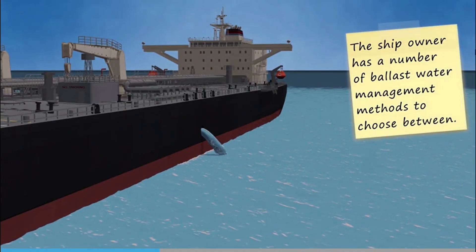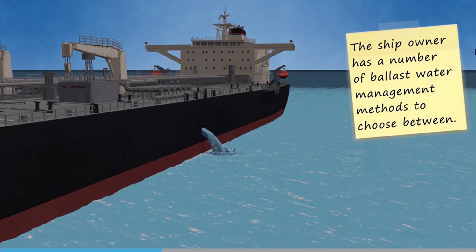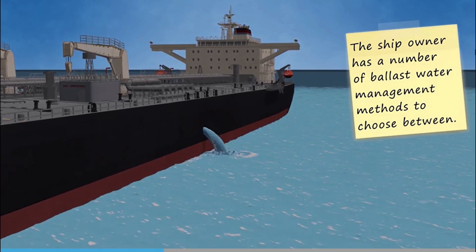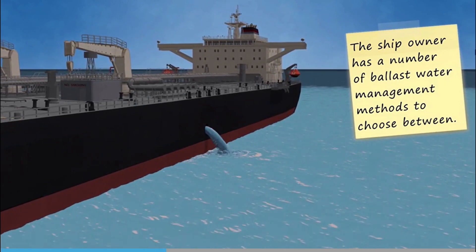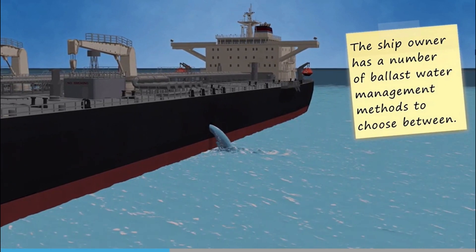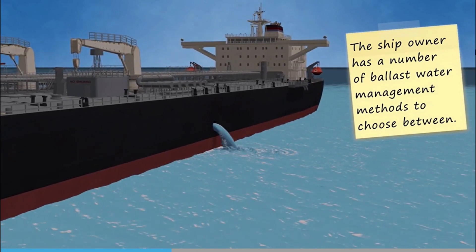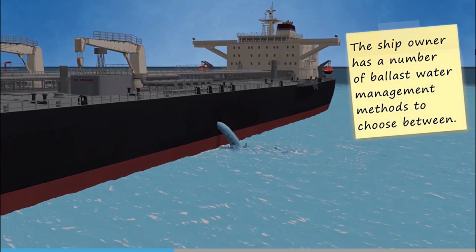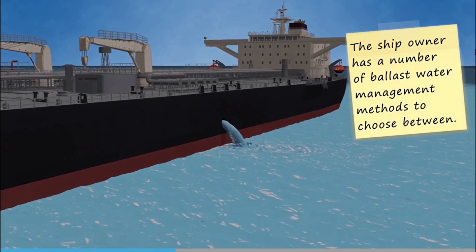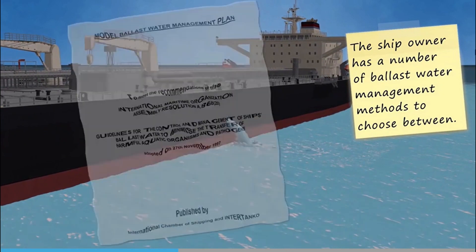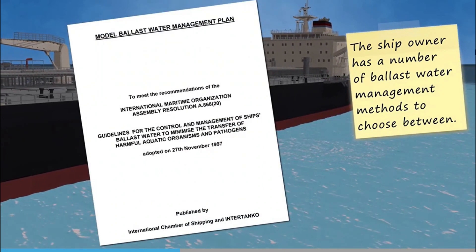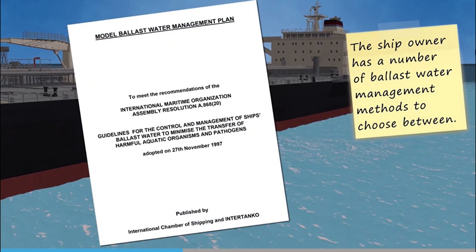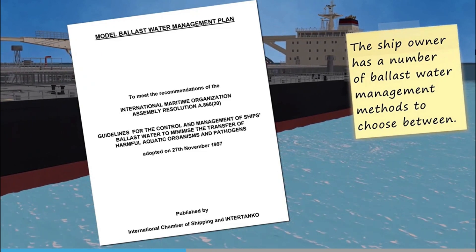The ship owner has a number of ballast water management methods to choose between. A combination of methods can also be used depending on the trading area, the age of the ship, and the planned maintenance cycle. Ballast water exchange may not be sufficient on its own. Careful consideration of the methods is necessary and the choices should be documented in the ship's ballast water management plan.